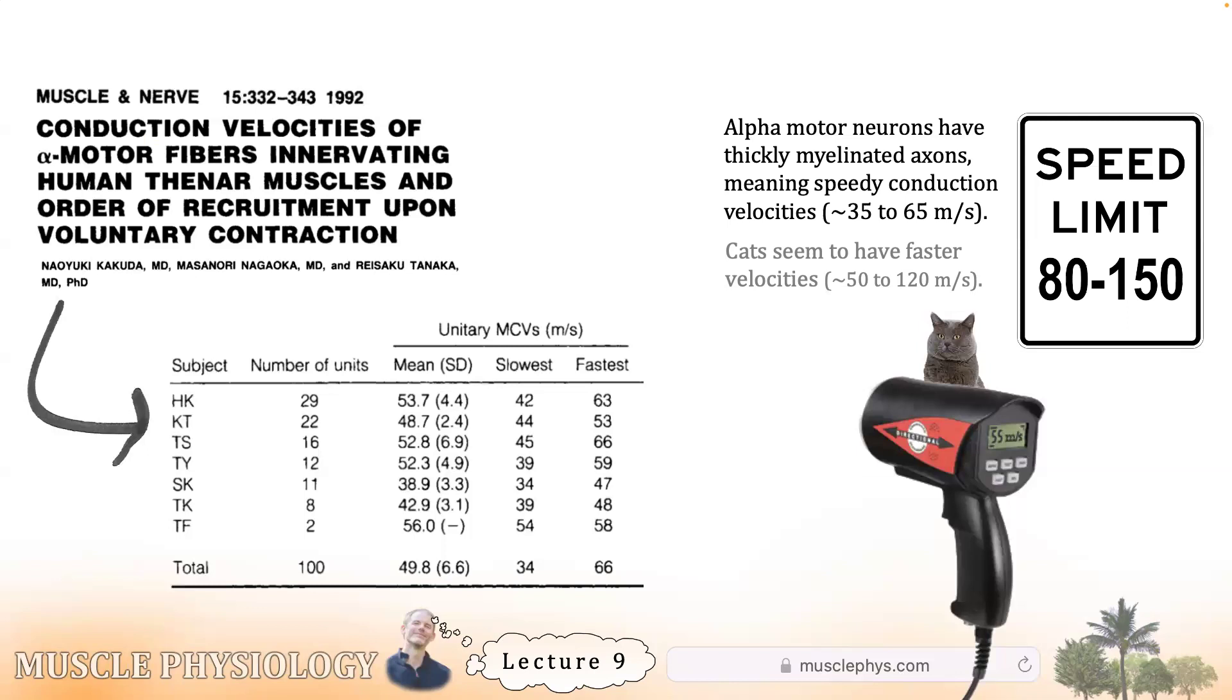Now when the signal reaches the muscles, it travels a lot slower. The conduction velocity of your muscle fibers, which means the speed that an action potential travels along its membrane, that might be like 2 to 10 meters per second. It depends on the fiber's type and diameter, the temperature, maybe pathological conditions. Overall though, the conduction velocity of the muscles, roughly a tenth of the speed of the motor neurons supplying it.